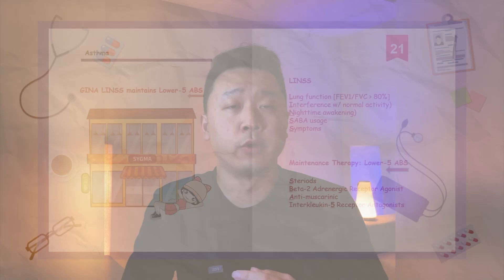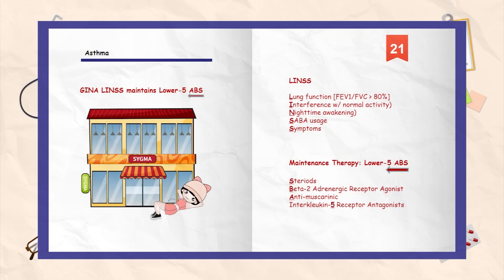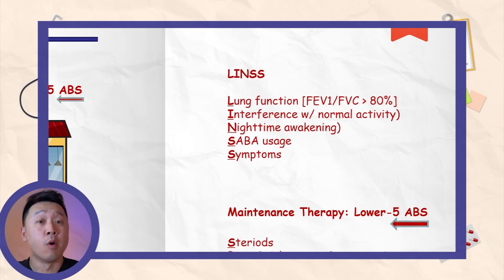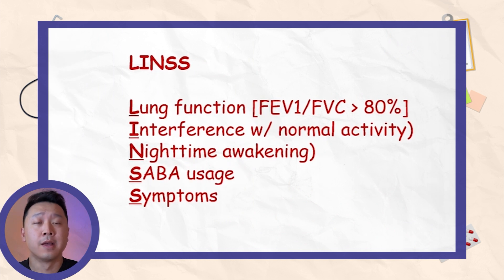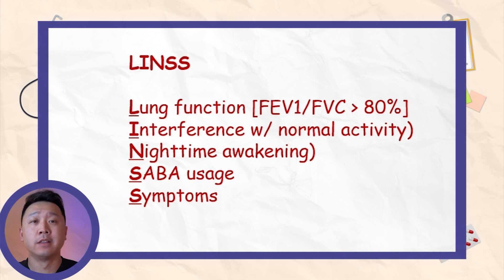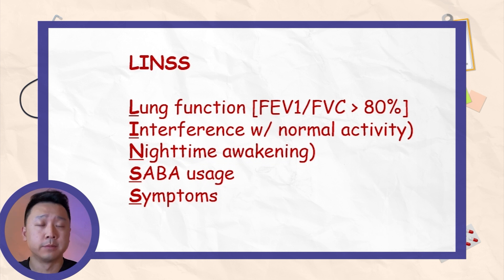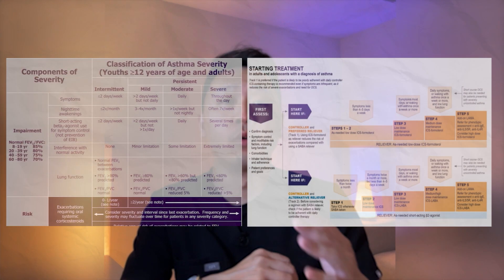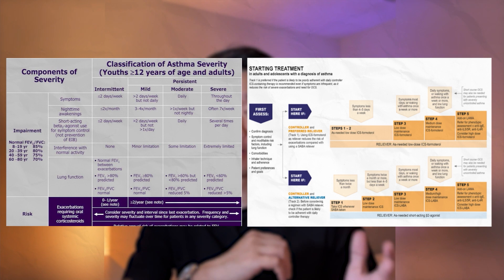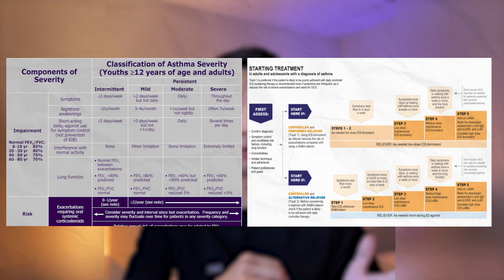The LINZ component represents the asthma clinical manifestations. L stands for Lung Function, I stands for Interference with Normal Activity, N stands for Nighttime Awakening, S stands for Short-acting Beta Agonist usage, and the other S stands for Symptoms. Based on these clinical manifestations, we match the corresponding severity with the treatment algorithm.